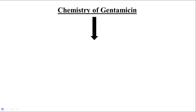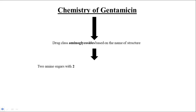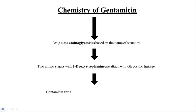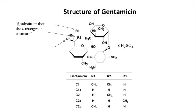Now let's talk about the chemistry of gentamicin. Drug class: aminoglycosides, based on the name of the structure in which two amino sugars attach with deoxystreptamine through glycosidic linkage. They show variations in structure due to the substitution on R1, R2, and R3. That is the structure of gentamicin where R1, R2, and R3 show the changes in the structure.